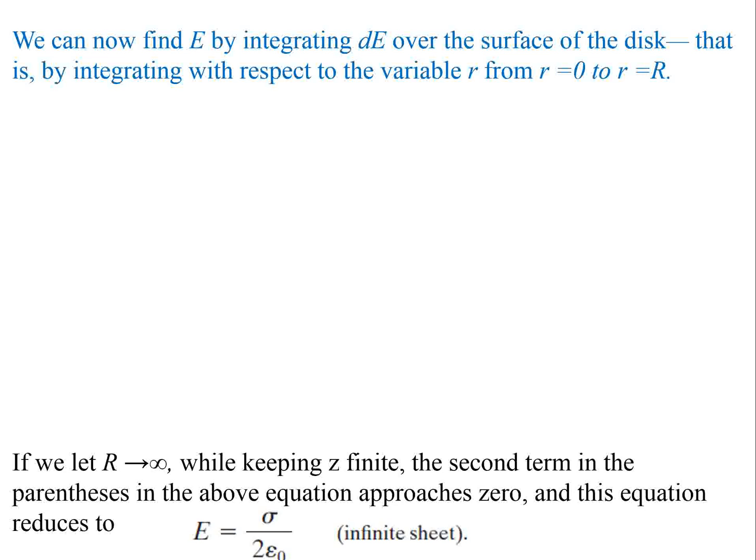Now we can find E by integrating dE over the surface of the disk. So we just found the little ring. We want the whole surface, so we can integrate from our variable r, which is the radius, from r equals 0 to r equals big R, which is a constant.